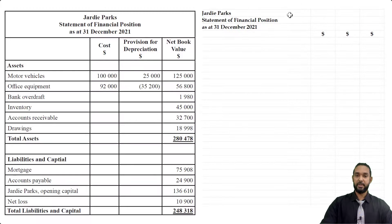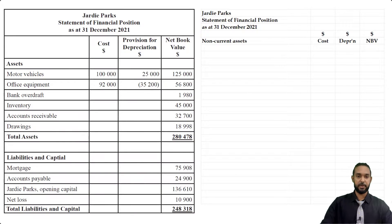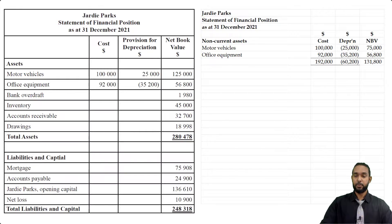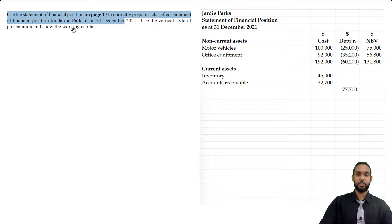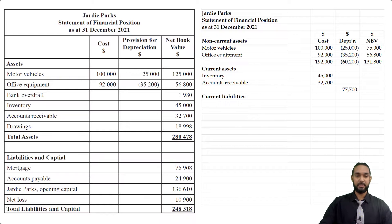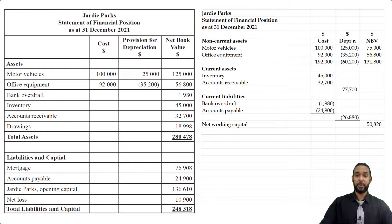Please don't forget to head it up. Starting with non-current assets: motor vehicles 100,000 minus 25,000 gives 75,000; office equipment 92,000 minus 35,000 gives 57,000 — giving us 131,800 total non-current assets. The question asked us to show working capital using vertical style. Current assets — inventory and accounts receivable — total 77,700. Current liabilities are bank overdraft and accounts payable totalling 26,880. Working capital is current assets minus current liabilities: 77,700 minus 26,880 equals 50,820. Adding that to non-current assets gives 182,620.